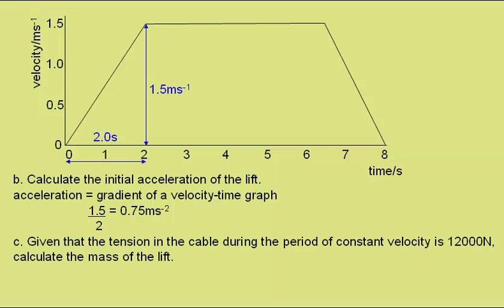Part C: Given that the tension in the cable during the period of constant velocity is 12,000 newtons, calculate the mass of the lift. During the constant velocity, the only acceleration to consider is that due to gravity. And using F equals MA, we can rearrange to M is force over acceleration.